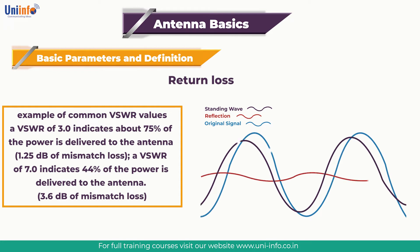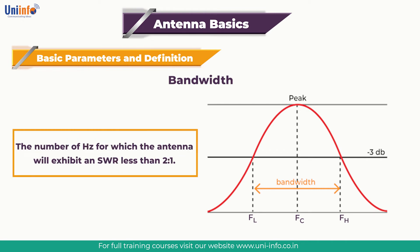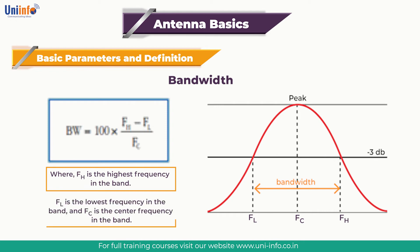In the next section we look at bandwidth. The bandwidth of an antenna refers to the range of frequencies over which the antenna can operate correctly. It is the number of hertz for which the antenna will exhibit an SWR less than 2:1. Bandwidth can also be expressed as a percentage of the center frequency: BW equals 100 times (fH minus fL) divided by fC, where fH is the highest frequency, fL is the lowest frequency, and fC is the center frequency.